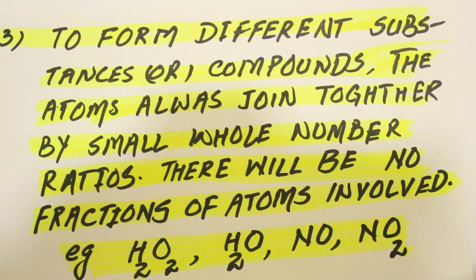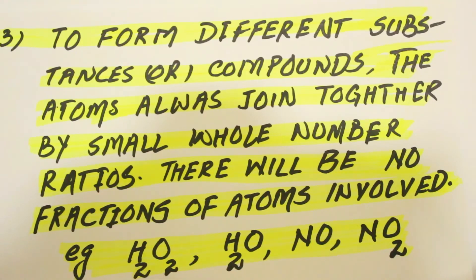The third important point of Dalton's Atomic Theory is that whenever a chemical reaction happens, atoms always join together by simple whole number ratios. So whenever a chemical reaction happens, you see the reactants and products always in simple whole numbers. For example, think about these compounds as a product of any chemical reaction and now you see that there is no fractional part involved here.